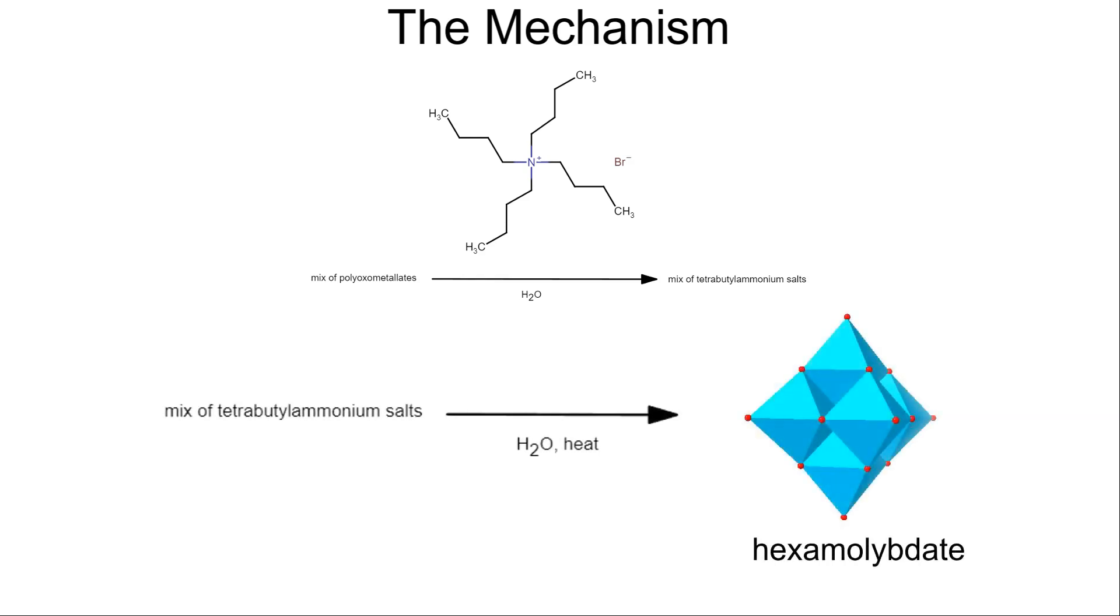When the mixture is heated, the complicated mixture of polyoxometalate anions combines, forming the hexamolybdate anion, which forms the yellow solid in the reaction. And that completes the mechanism, so let's get back to the reaction.